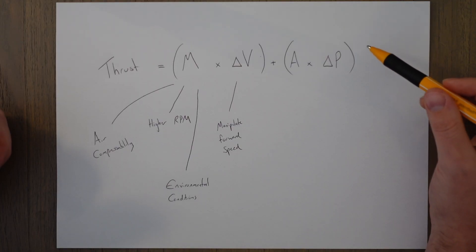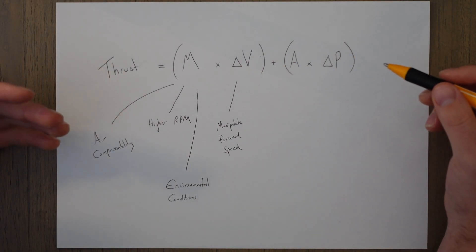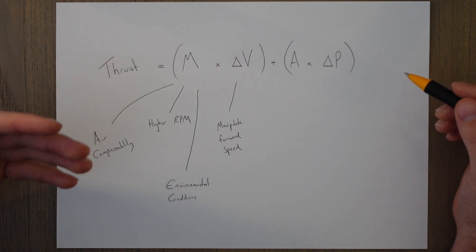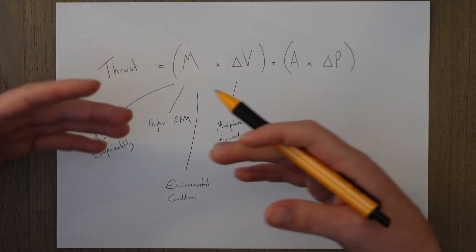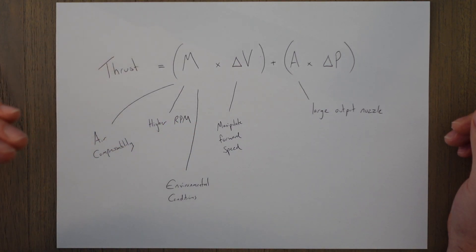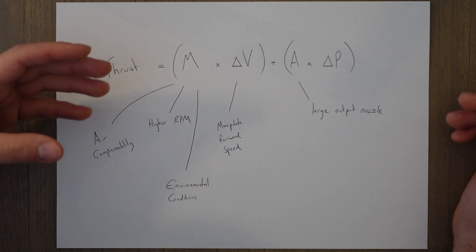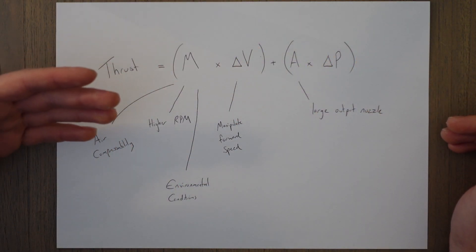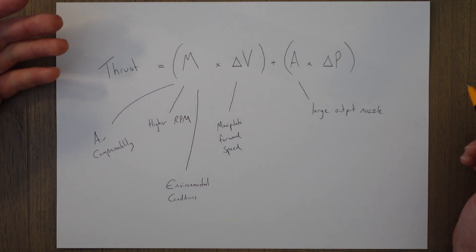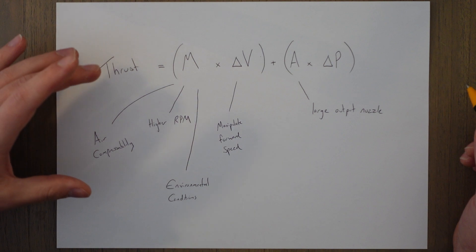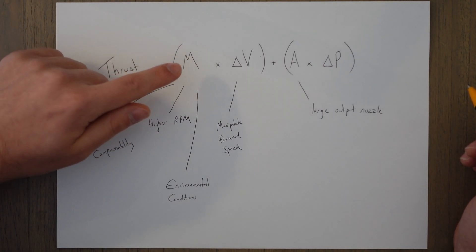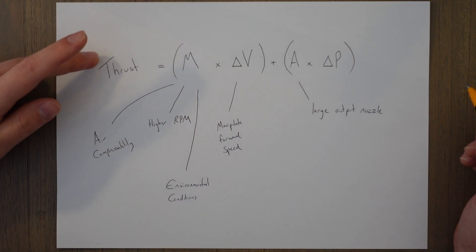We can also ensure the nozzle area at the output of the engine is as large as possible to maximize the pressure differential term in our equation — part of the reason a bigger jet engine creates more thrust. There are also ancillary systems that draw air away from within the engine, reducing mass flow and therefore thrust. Engine anti-icing systems can heat air before it enters the engine, making it less dense, meaning less mass flows through and the engine produces less thrust. Switching off all these ancillary systems will help maximize thrust output.